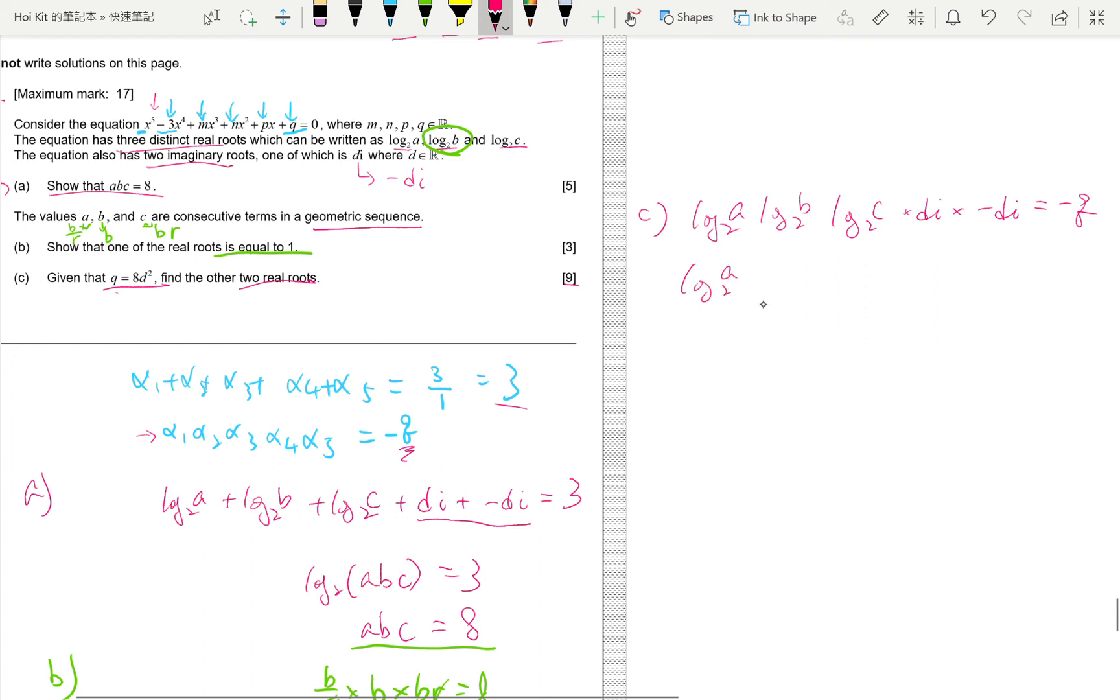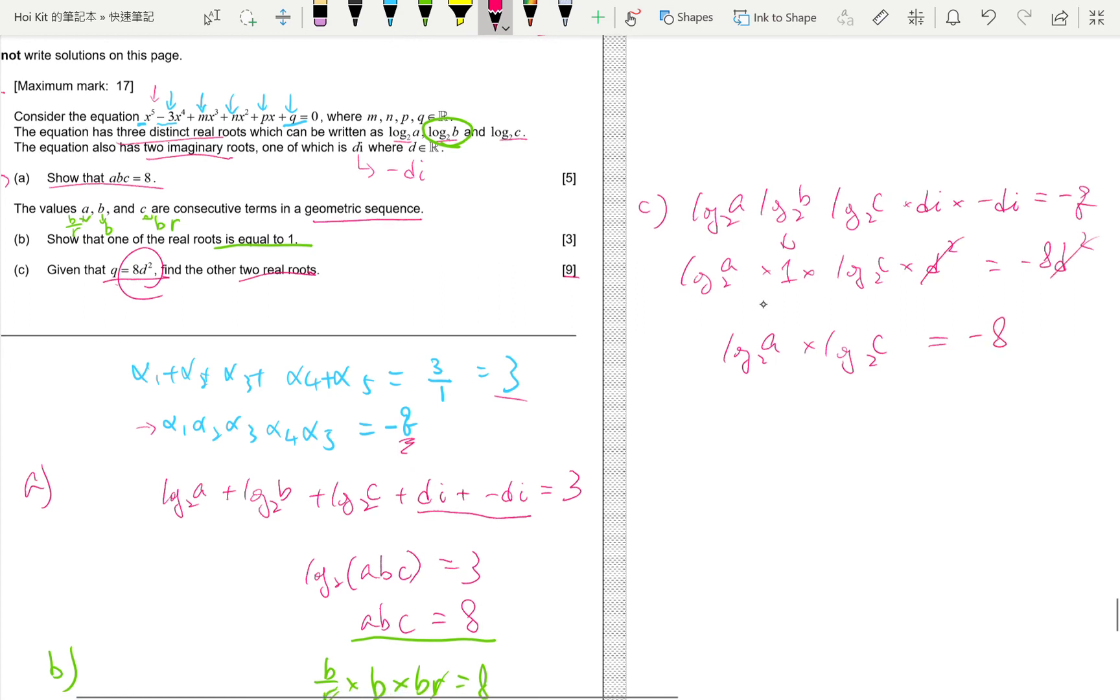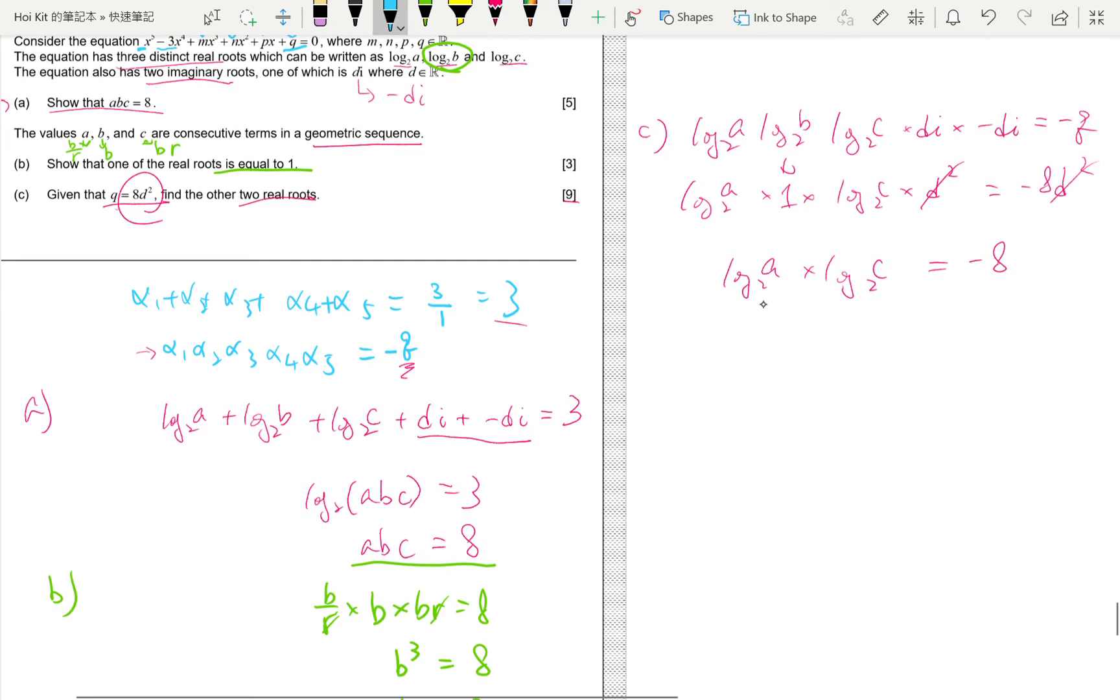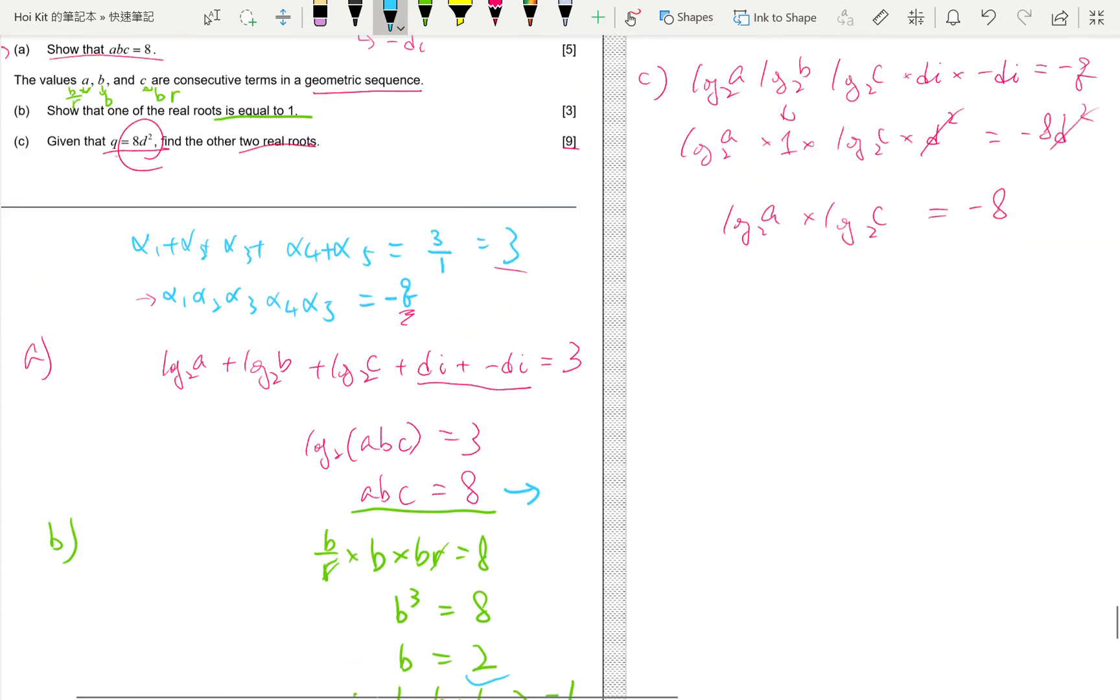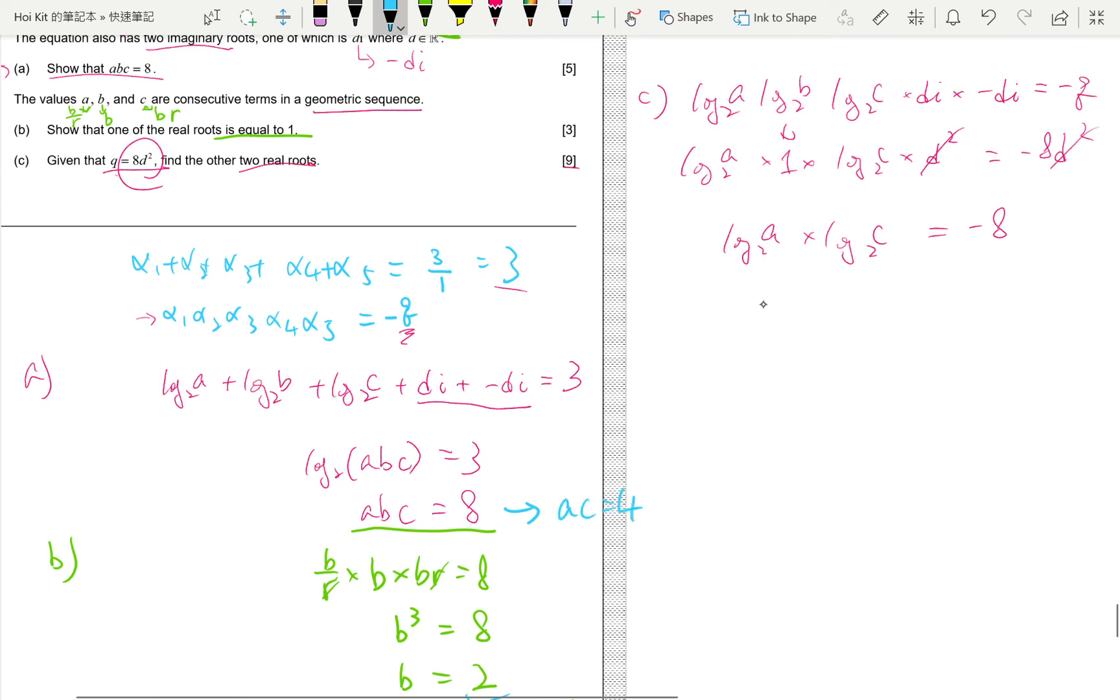What do we know? We know log b base 2 is 1, log c is log c, d times d is d squared, i times i squared is minus 1, minus minus 1 is plus 1, is minus q, but q is 8 d squared. So, d squared. And then, what do we have? Log a times log c equals the d squared cancel out minus 8. Okay. What else do we know? Here. We know b is 2. So, a times c is 4. So, c must be 4 over a.